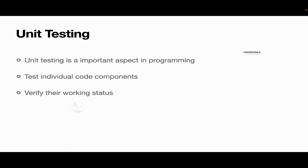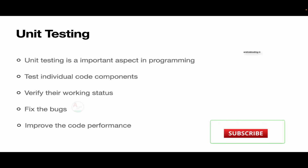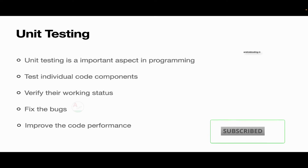Sometimes you might not have enough time to test each and every code component manually. Unit testing makes it much easier for you. Thereafter, fixing the bugs — whenever you have any bugs in your code, with the help of unit testing you can easily find them and fix them. This will in turn improve code performance. The code you are writing will have very good stability and crashes will be reduced in your application.